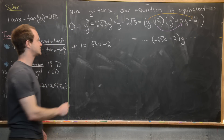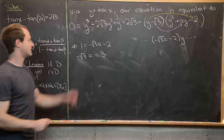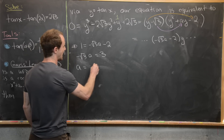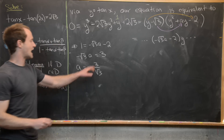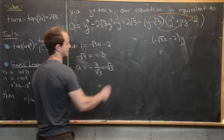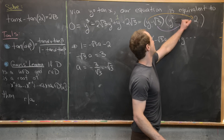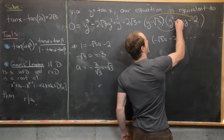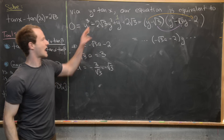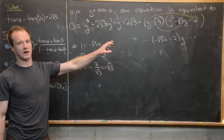We get the coefficient of y two ways on the right-hand side: from multiplying negative root 3 by a times y, and from multiplying y by negative 2, giving negative root 3 a minus 2. The coefficient on the left is 1, so we solve 1 equals negative root 3 a minus 2. Adding 2 gives negative root 3 a equals 3, and dividing by negative root 3 gives a equals negative root 3. So now we have our complete factorization into a linear and a quadratic polynomial.